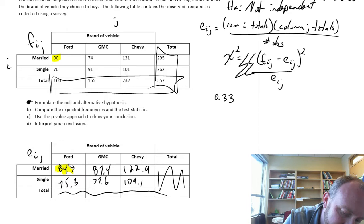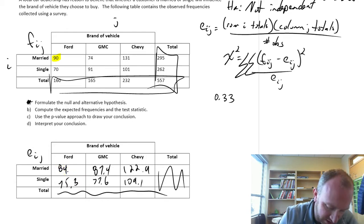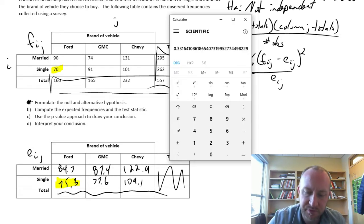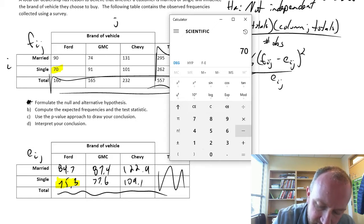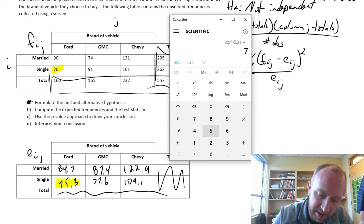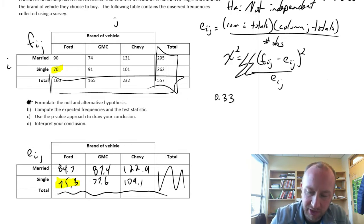Then the next one, I have to be careful, I don't want to erase that. The next one we'll do is going to be, let's stick with Ford, but we'll do the single, so 75.3 and 70. So this is 70 minus 75.3, so that's the difference. We square that difference, we divide it by the expected frequency, 75.3, and we have 0.37.